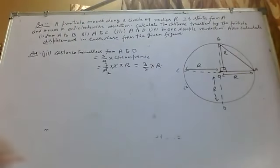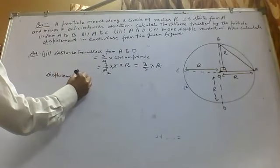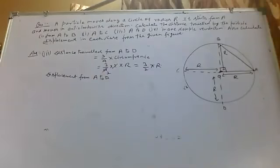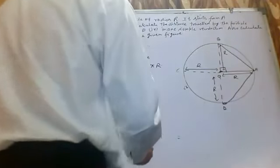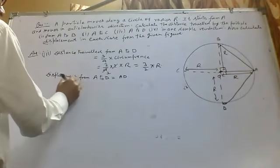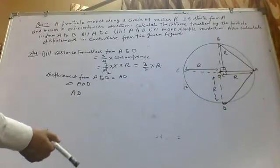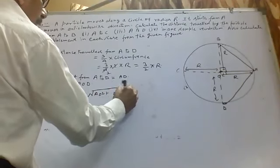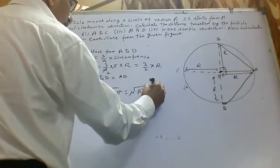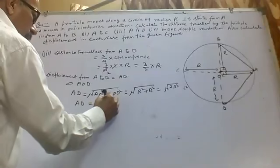And now displacement from A to C. Again displacement is the shortest distance between two points. From the diagram, A and C are at diametrically opposite ends, so the straight line from A to C passes through the center. Therefore displacement AC equals AO plus OC, which equals R plus R, so displacement equals 2R.